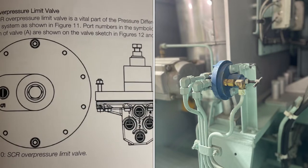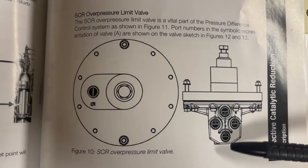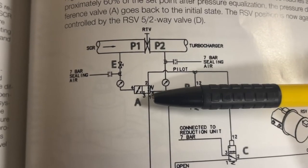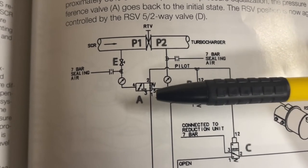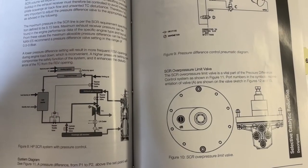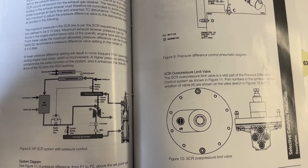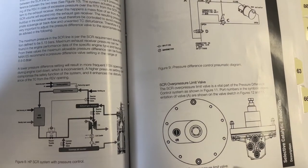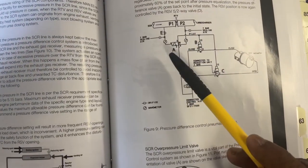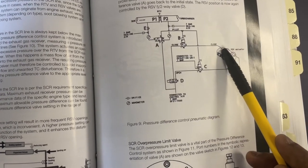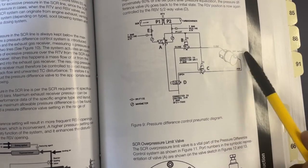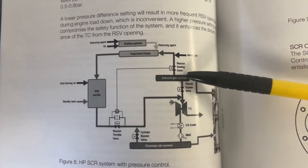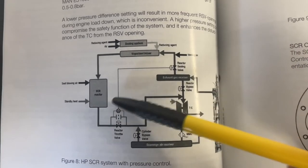The ports are numbered 1, 2, 3, 4, and 5. Engineers, I hope you understand the importance of the RSV over-pressure limit valve. This valve must function properly to cut off the pilot air to the RSV, so that the RSV will open in case the SCR line is over-pressurized.